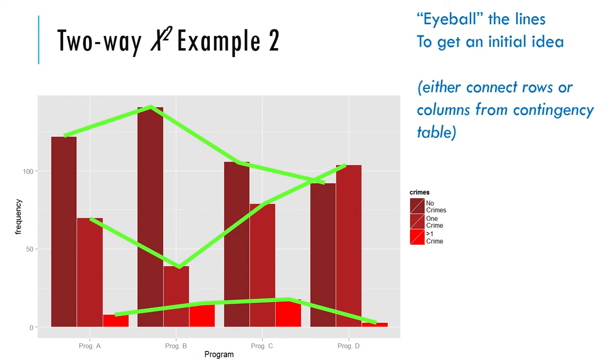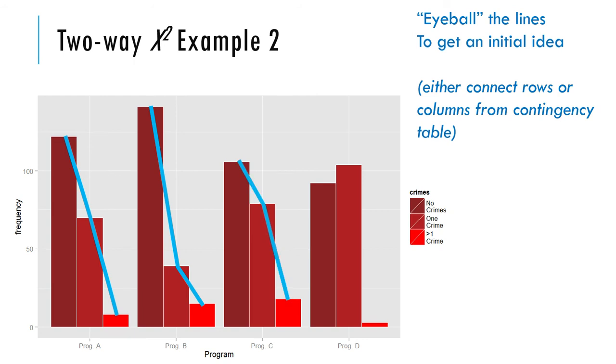We could connect the lines the other way too, within groups. We could make lines across the tops of each of the bar groups. Those don't look very parallel to me either. A little more than the other ones, but it's giving you the same information in a different way.